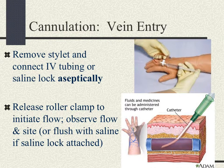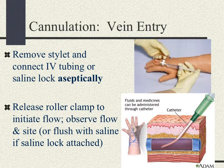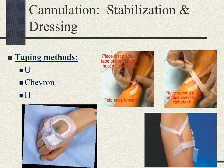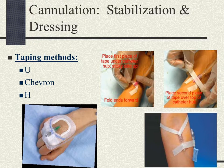Stabilize the catheter at all times until the taping is done, applying gauze under the stylet. Apply pressure above the catheter, then release the tourniquet. Now remove the stylet and connect the IV tubing or the saline lock aseptically. Release the roller clamp to initiate the flow, observe the flow and the site, or flush with saline if a saline lock is attached. You can use the U, Chevron, or H-taping method.